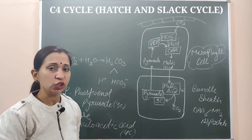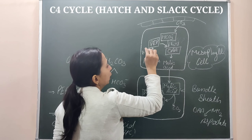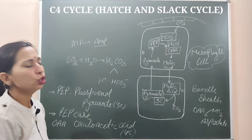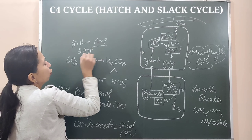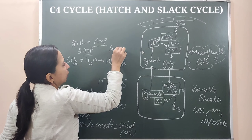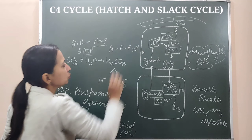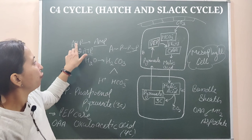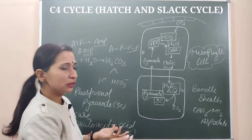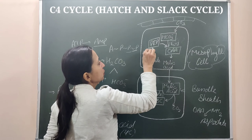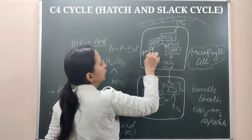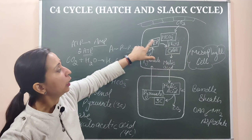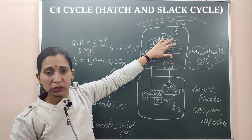Since pyruvate lacks a phosphate group and phosphoenolpyruvate has one, phosphorylation is required. In this process, 2 ATPs are required — 2 phosphate molecules are broken down — and ATP is converted into AMP. So 2 ATPs are required for pyruvate to get converted into phosphoenolpyruvate, regenerating the CO2 acceptor to keep the cycle continuing.